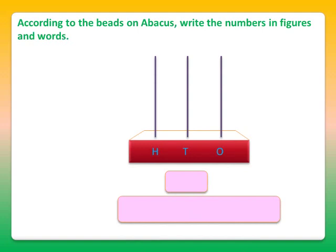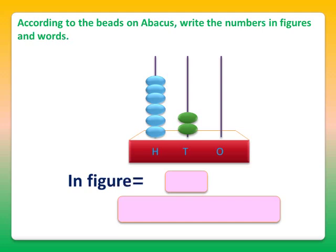We have an abacus with us and there are some beads. In the tens stick, it's 1, 2 - that's 2 tens, so 20. And the hundreds stick contains 1, 2, 3, 4, 5, and 6 beads. So the number becomes 600 and 20, which is 620. And in words also, we will write 620.